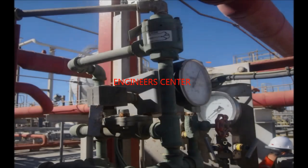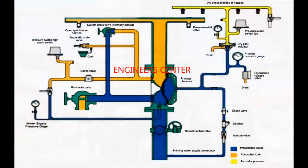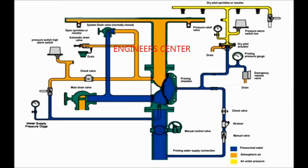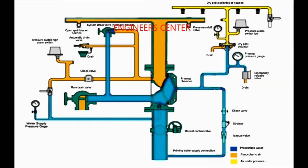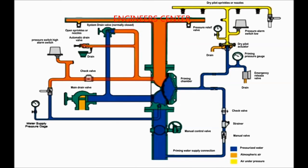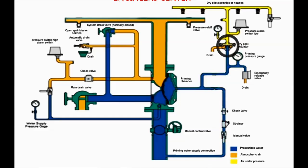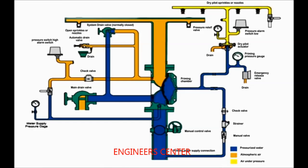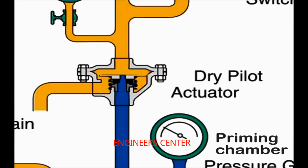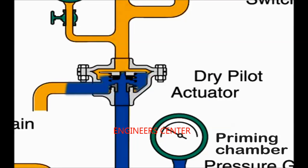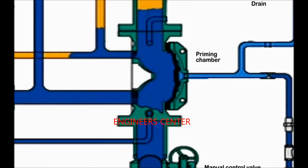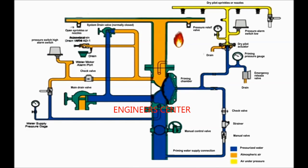Another method of activating the deluge system is the dry pilot actuator. Here is a diagram to explain its operation. The yellow color represents pressurized air between the dry pilot actuator and the sensing element, the blue color represents pressurized water, and the orange color represents atmospheric air. The dry pilot actuator is connected to the priming loop from one side and to the drain from the other side. In case a sensing element detects high temperature, the pressure on top of the dry pilot actuator is released, opening the path to the drain, and therefore the priming pressure is released, activating the deluge system.